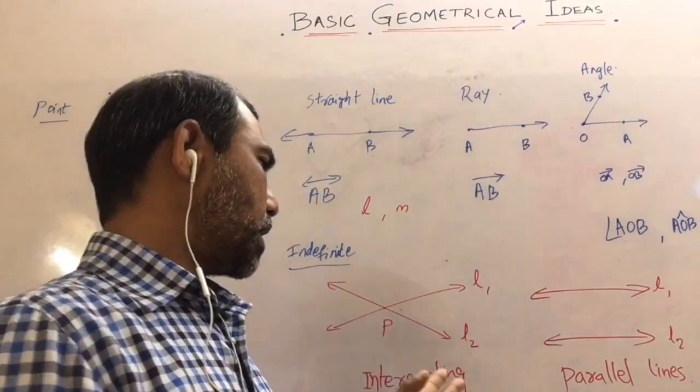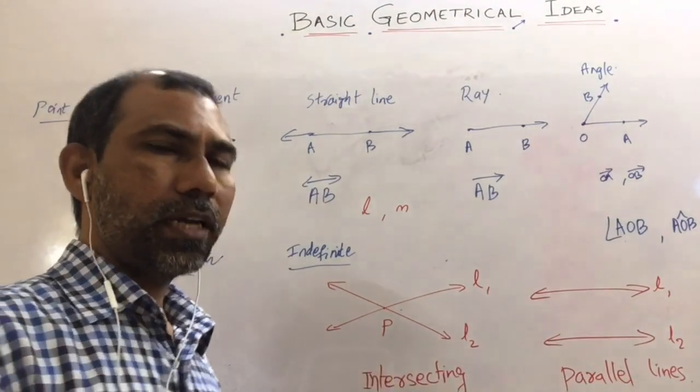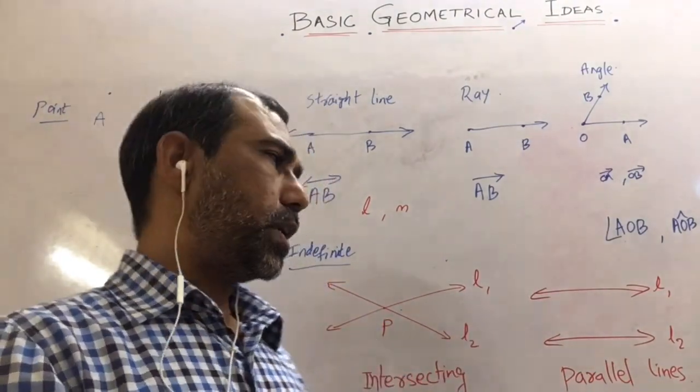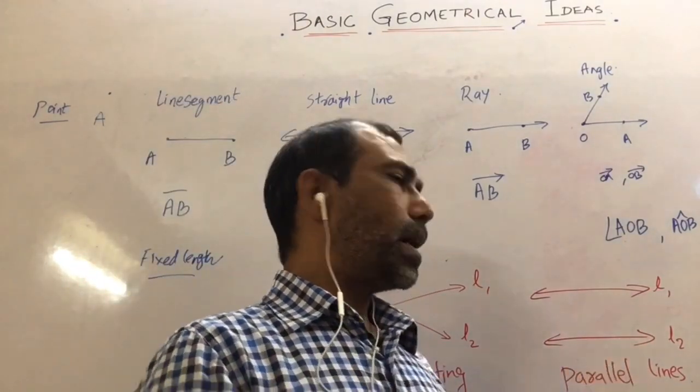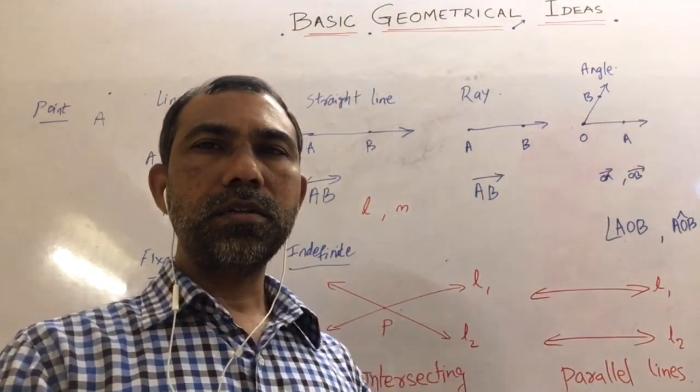We can take examples of intersecting line at a crossroad and we can give an example for parallel line as the railway tracks.